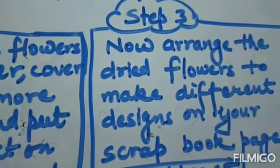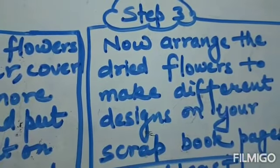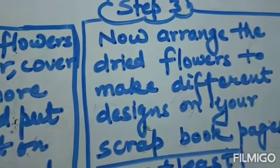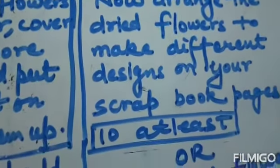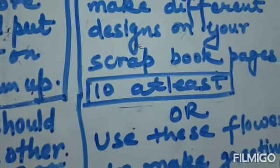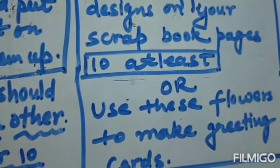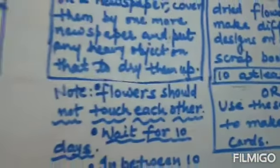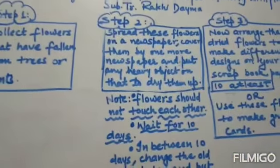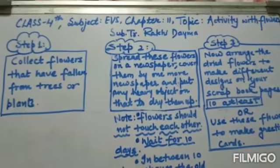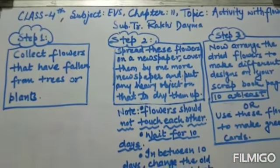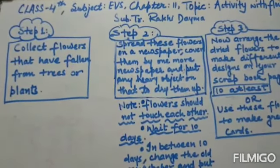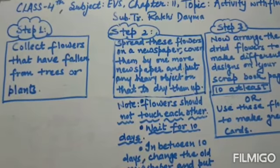Step 3 is the final step: arrange the dried flowers to make different designs on your scrapbook pages. You have to make at least 10 designs. You can also use these flowers to make greeting cards. So, dear children, you have to perform this activity in these 3 steps. Read the instructions carefully, perform the activity, and make a scrapbook.